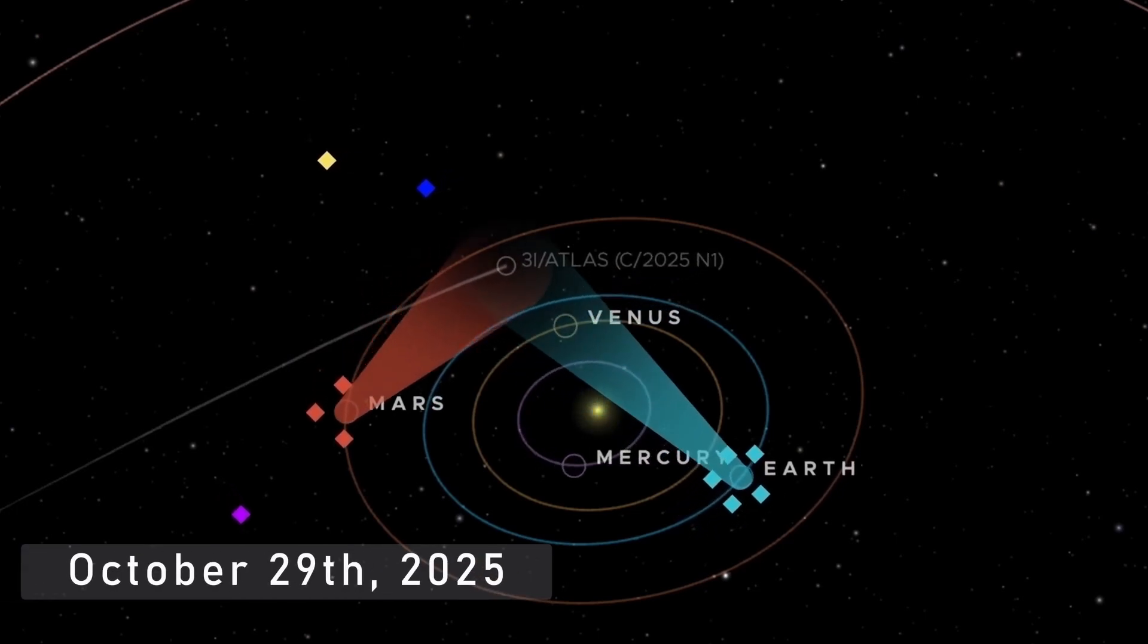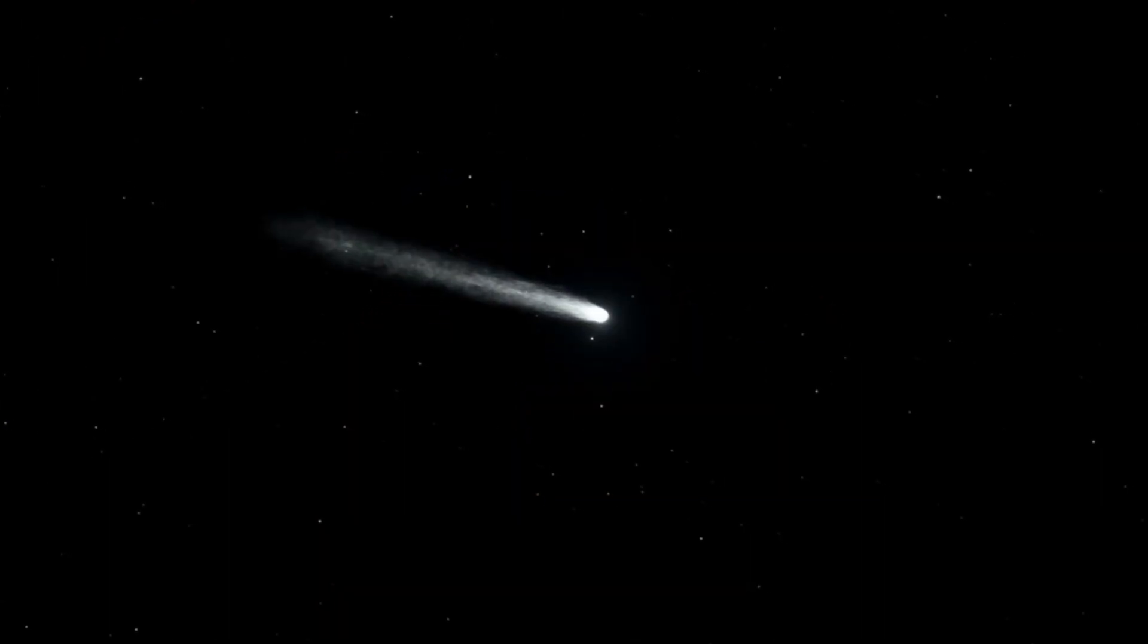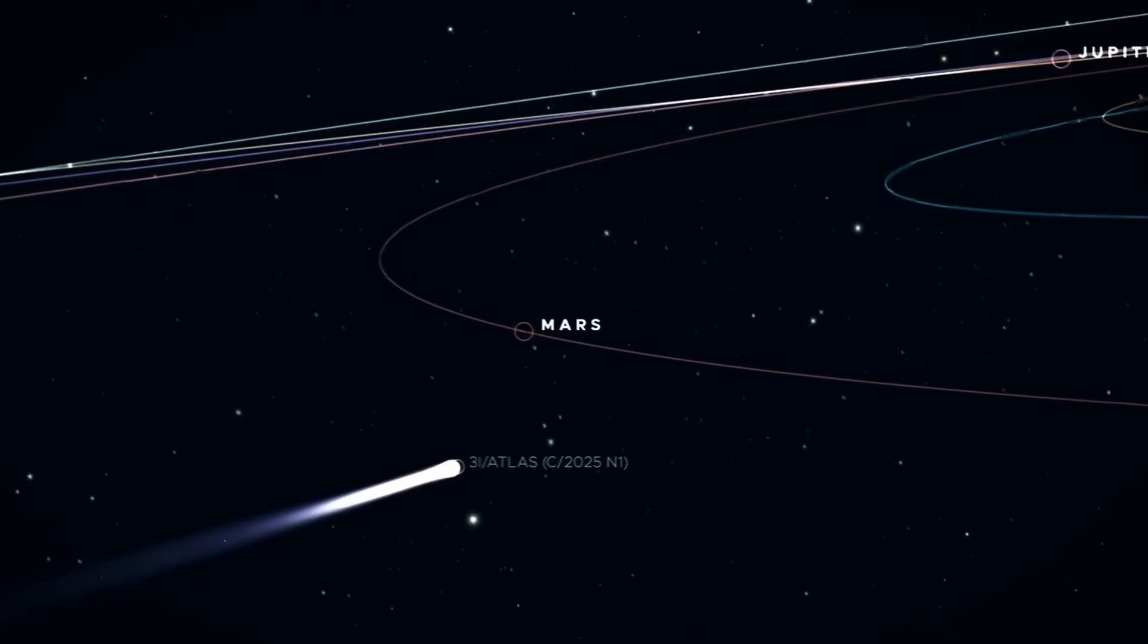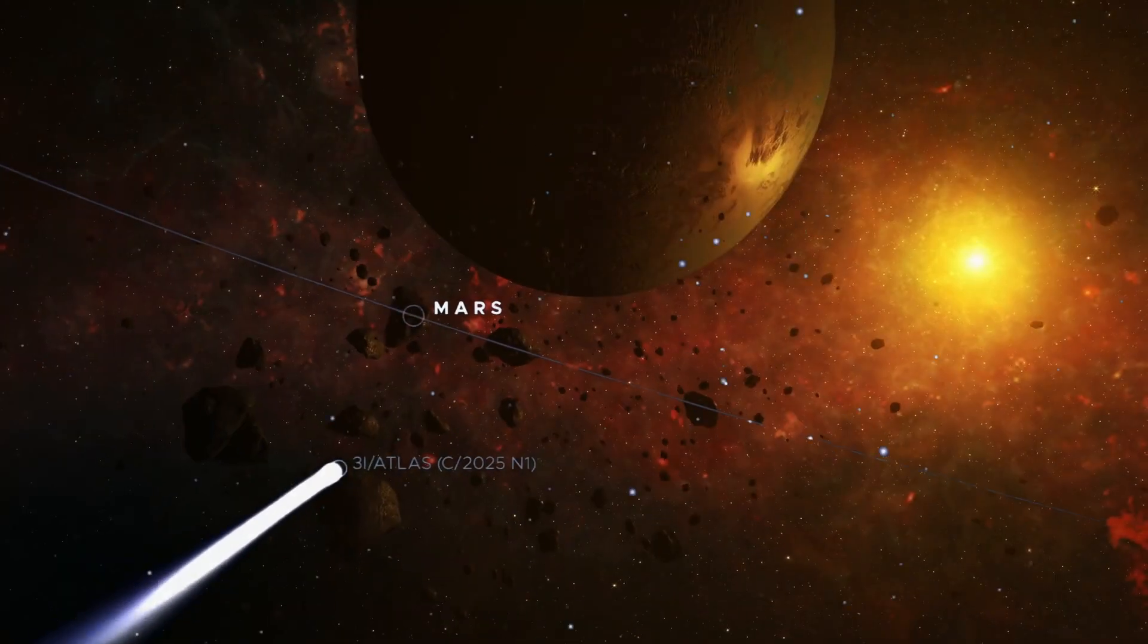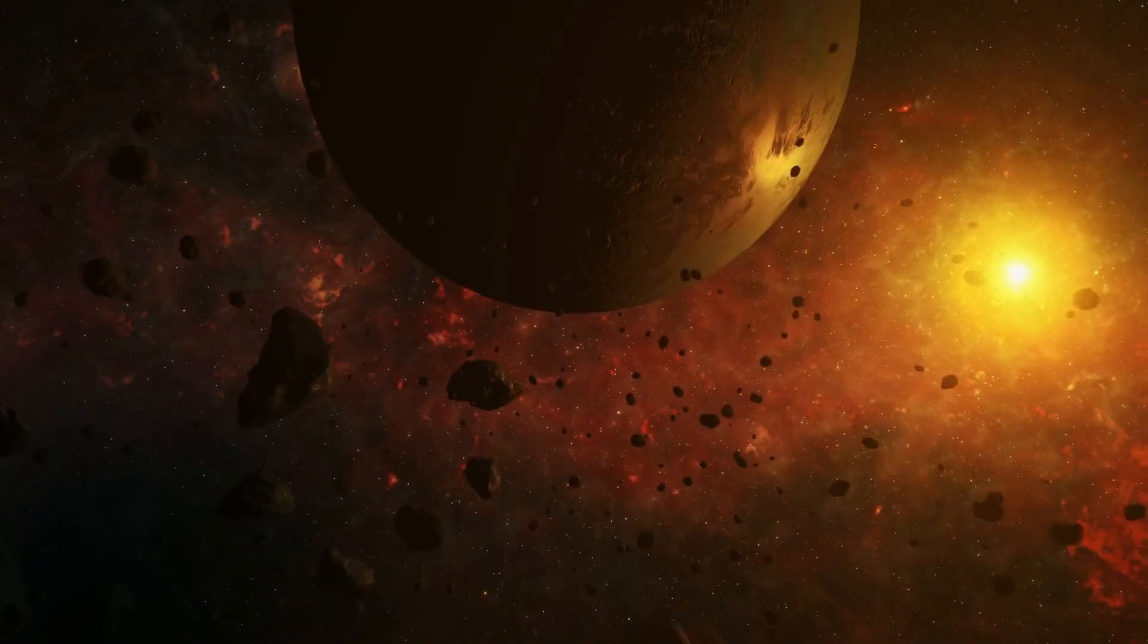On October 29th, 2025, something extraordinary unfolded on the far side of the Sun. An object from another solar system, 3i Atlas, had reached perihelion, its closest point to the Sun.